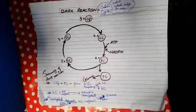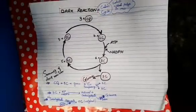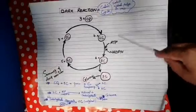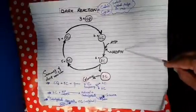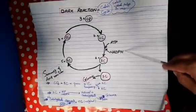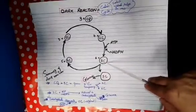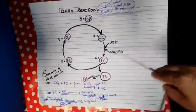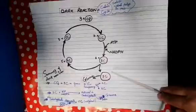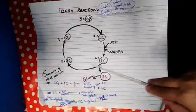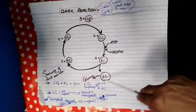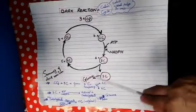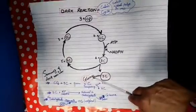That 3-carbon compound, by using ATP and NADPH — these two are produced in the light reaction, which we discussed in the previous lecture — is reduced into 3-carbon carbohydrates. And from these 3-carbon carbohydrates, glucose molecules are formed.